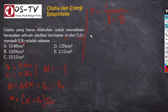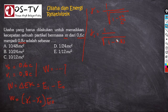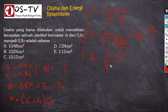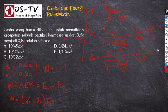Kita selesaikan γ₁ terlebih dahulu: γ₁ = 1 / √(1 − (0,8C)²/C²) = 1/0,6 = 10/6. Kemudian γ₀: γ₀ = 1 / √(1 − (0,6C)²/C²) = 1/0,8 = 10/8. Hasil perhitungan gamma ini kemudian kita masukkan ke dalam persamaan W.